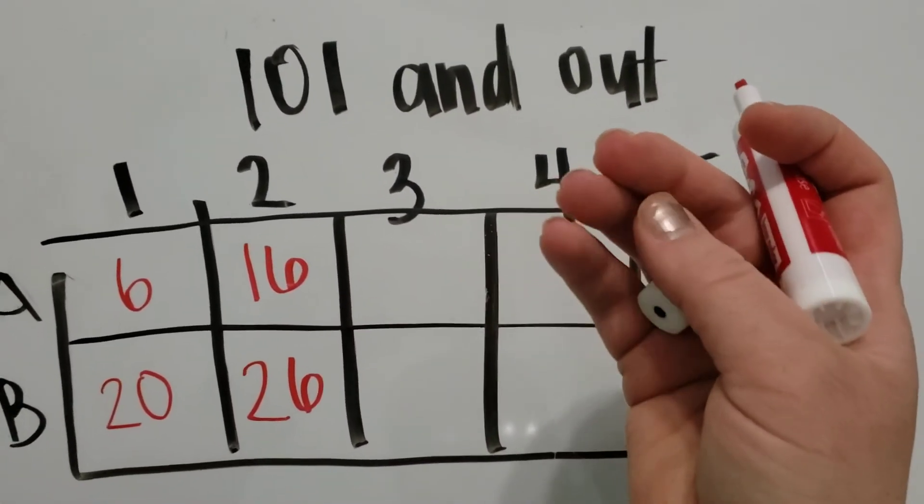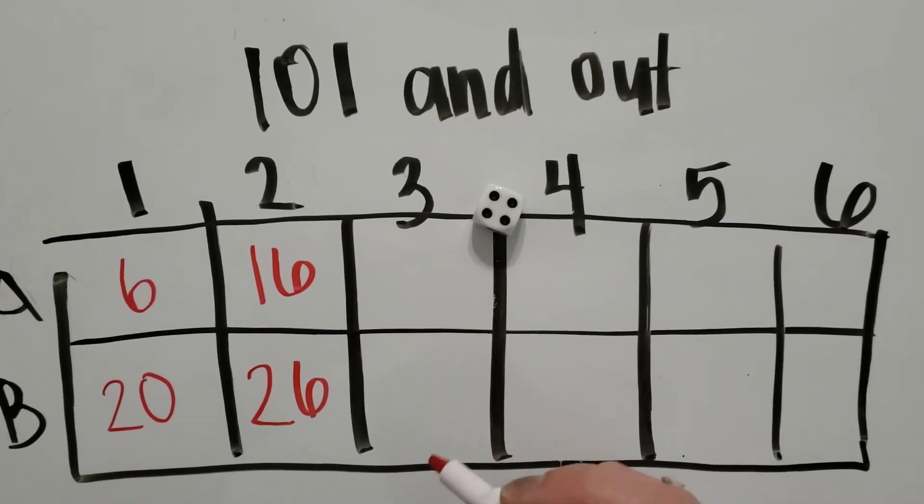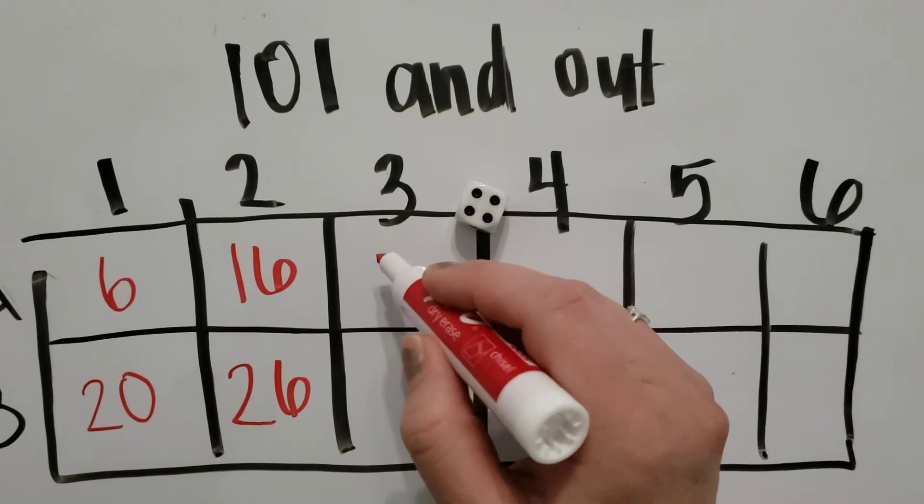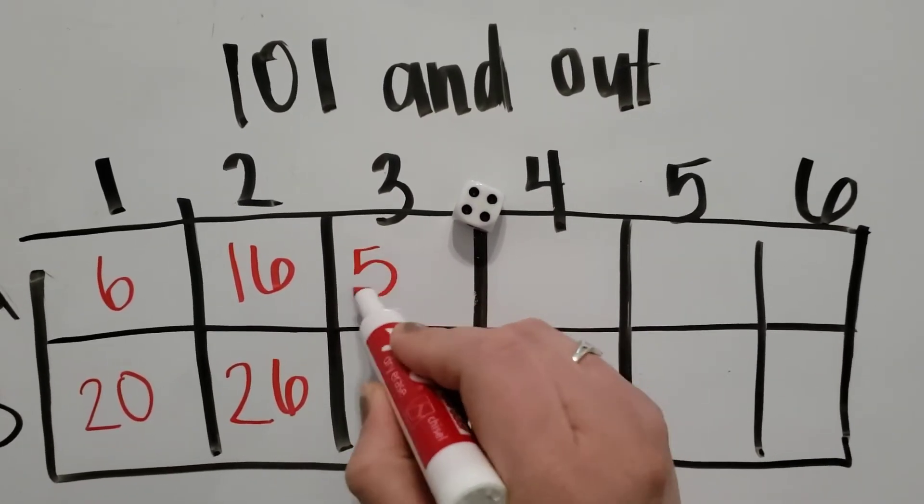And then the first person would roll a four. They can either do four or 40. I'm going to choose 40 because 16 plus 40 would be 56.